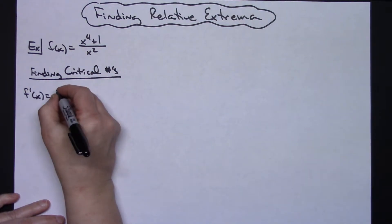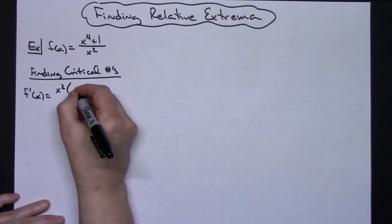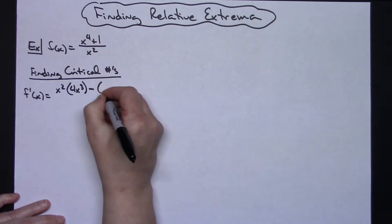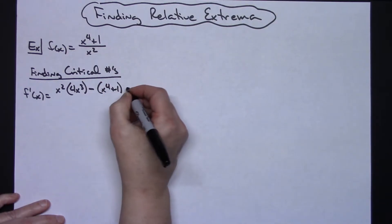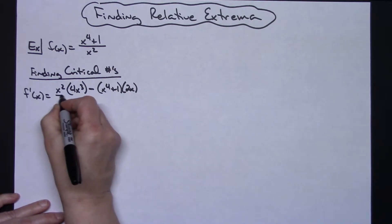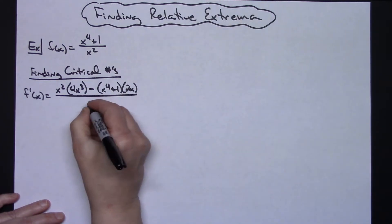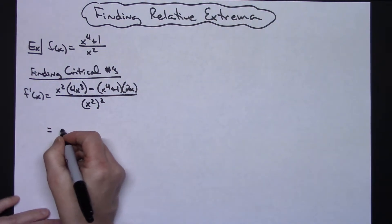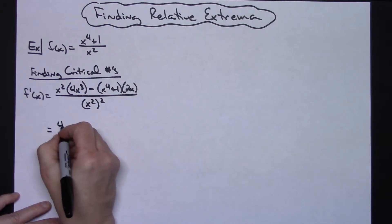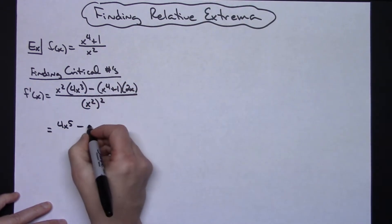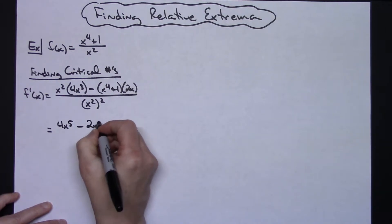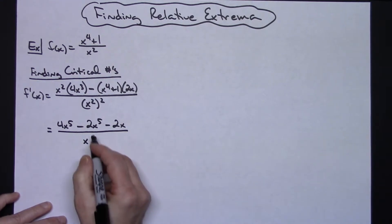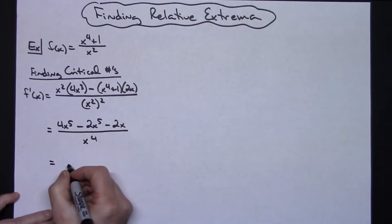Using the quotient rule: the bottom times the derivative of the top, which would be 4x to the third, minus the top — which is x to the fourth plus one — times the derivative of the bottom, which is 2x, all over the bottom squared. So x squared, and then squaring that again. Doing a little simplifying, we'll have 4x to the fifth minus — distributing there — 2x to the fifth minus 2x.